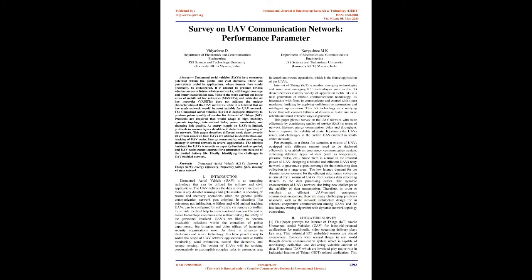Survey on UAV Communication Network Performance Parameters. Unmanned Aerial Vehicles (UAVs) have enormous potential within the public and civil domains, particularly useful in applications where human lives would preferably not be endangered. UAVs are utilized to provide flexible wireless access in future wireless networks with larger coverage and better transmission rate. Most work in mobile ad hoc networks (MANETs) and vehicular ad hoc networks (VANETs) does not address the unique characteristics of UAV networks, while ad hoc mesh networks are believed most suitable for UAV networks.